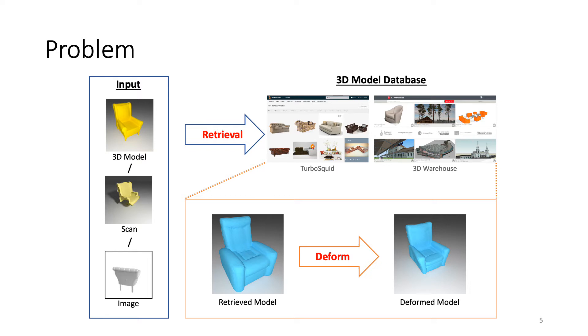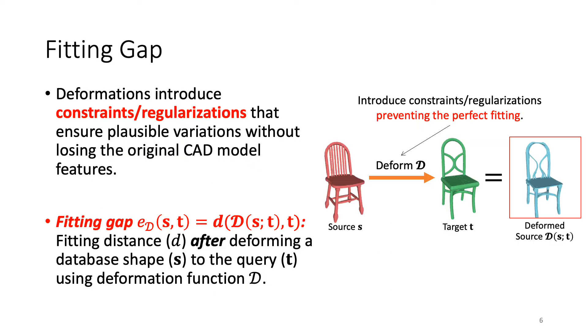In order to retrieve models that better fit after deformation, our goal is to construct a deformation-aware embedding space. Before discussing the design of our embedding space, we first introduce the notion of fitting gaps. Deformations introduce constraints and regularizations that ensure plausible variations without losing the original CAD model features. These constraints prevent the perfect fitting to the desired target. As shown, when we deform the red chair into the green chair, the resulting blue chair does not exactly match the target green chair. Thus, we introduce the notion of fitting gaps, ED, which is the distance between shapes after deformation. Concretely, it is the chamfer distance after deforming a database shape S to the query T using deformation function D.